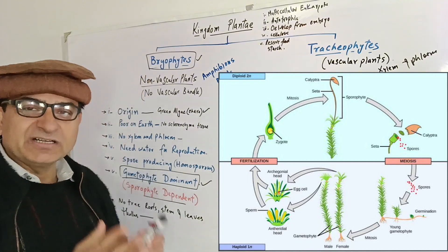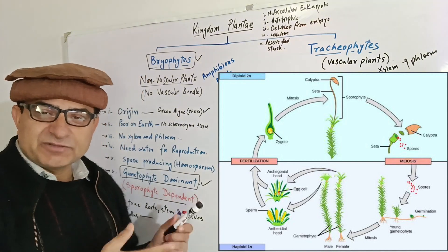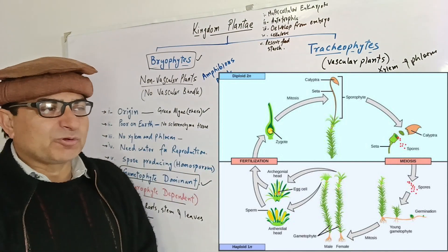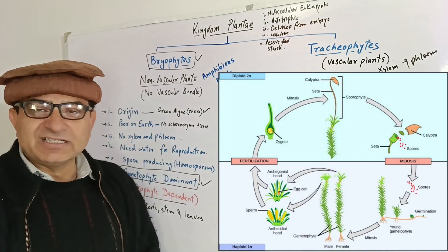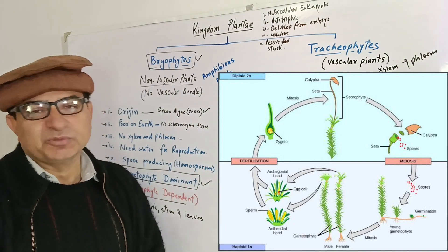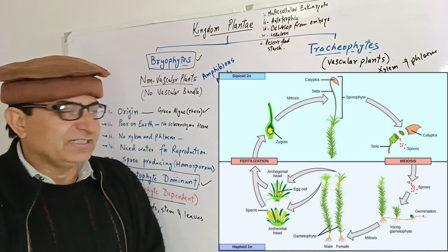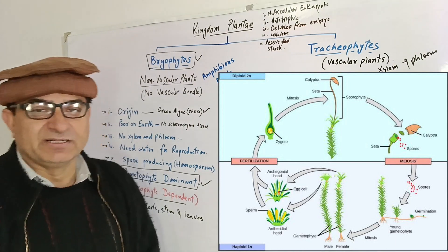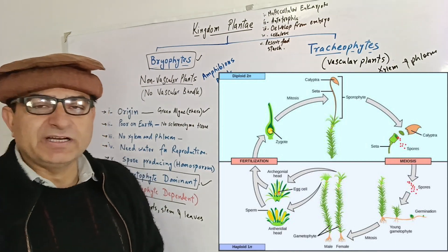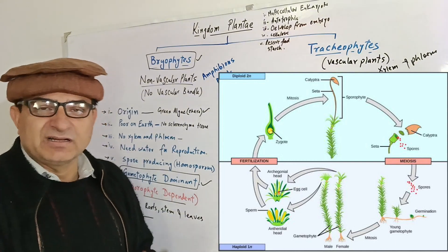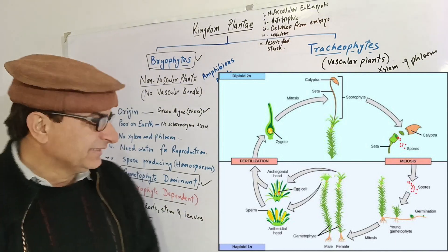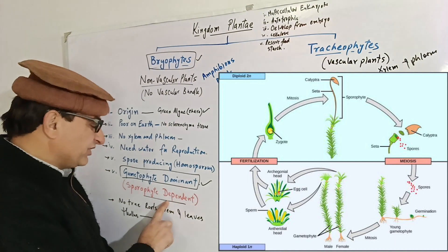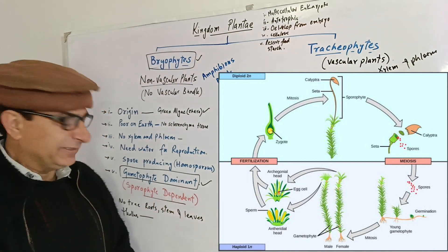The sporophyte depends on the gametophyte for nourishment and protection. The green part of the plant that you can see is the gametophyte part, which is photosynthetic and independent. The sporophyte is dependent on the gametophyte for nourishment. That is why gametophyte generation is dominant and sporophyte generation is dependent.